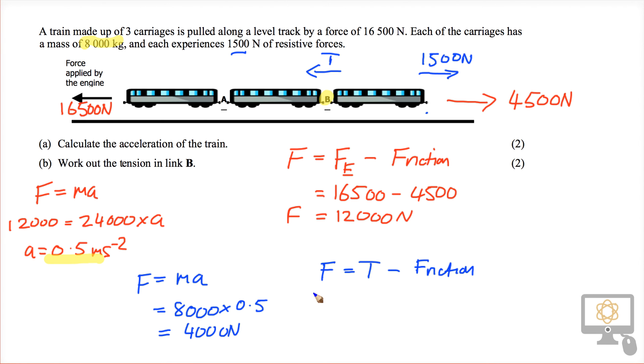If we do this sum, if we fill in the numbers, the unbalanced force is 4,000, the tension is what we're trying to find out, and the friction is 1,500.